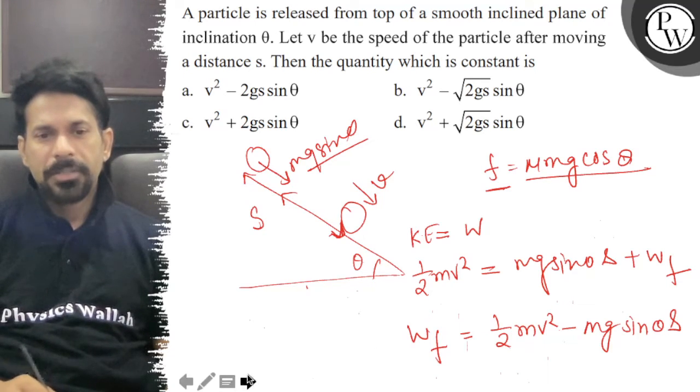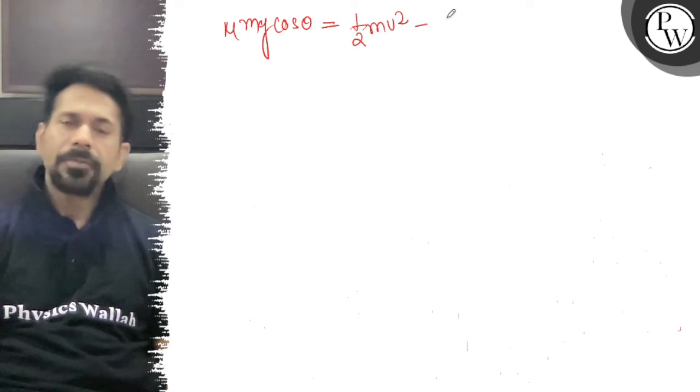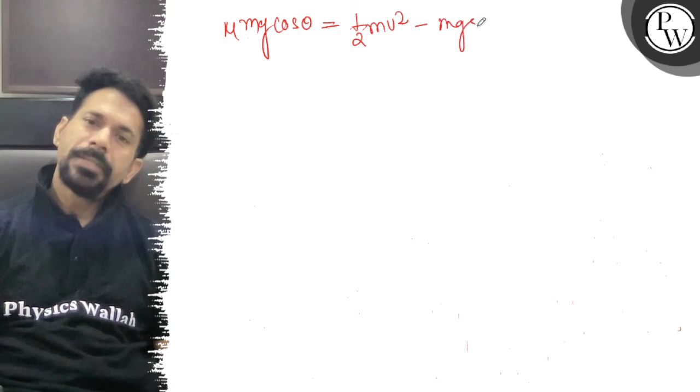So if we can see here, work done by friction, so here friction is mu mg cos theta, is equal to half mv square minus mg sin theta into displacement s.